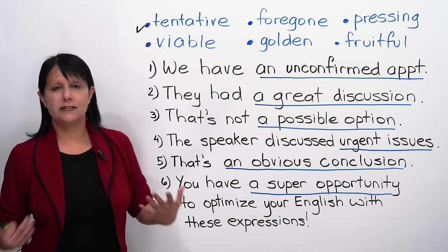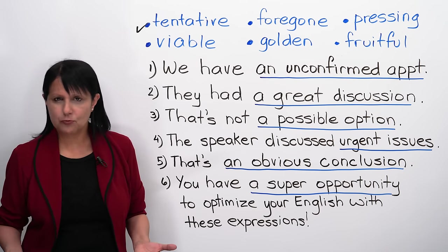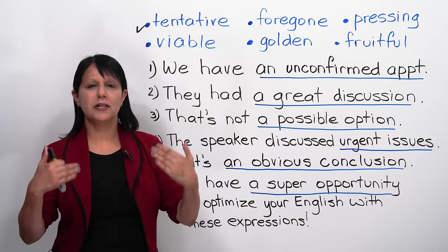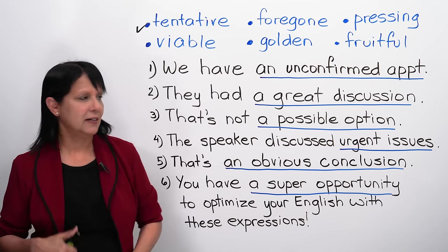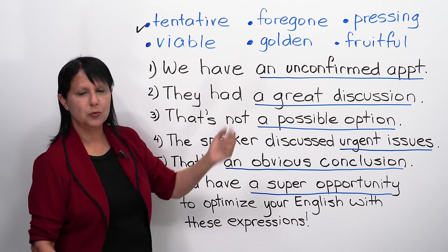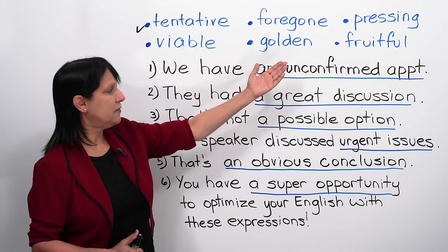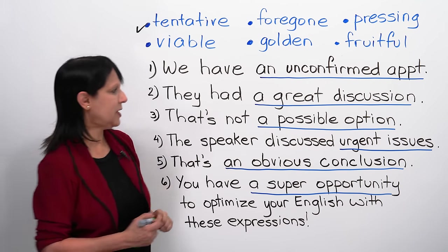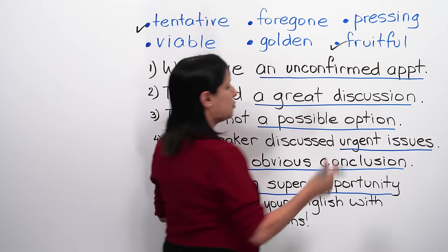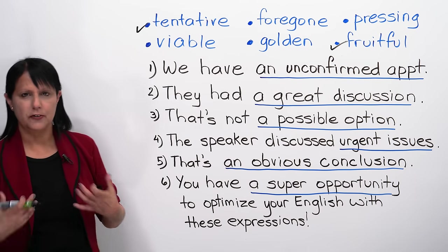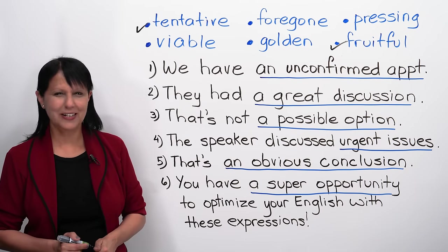Next. They had a great discussion. That's not wrong. What's a better way to say it? Let's upgrade it. They had a... Which of those words? They had a fruitful discussion. Fruitful. Useful. Very successful. Very good. Very helpful.